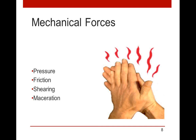What mechanical forces contribute to pressure ulcers? Well, of course pressure — that's right in the name. There's also friction, shearing, and maceration. Friction is the rubbing of two forces together. Shearing is when the skin slides over a bony prominence and deteriorates the skin's protective layers from underneath. Maceration is the over-hydration of the skin — think of what your fingertips look like when you've been in soapy water and they get soft, white, and mushy. That's maceration.